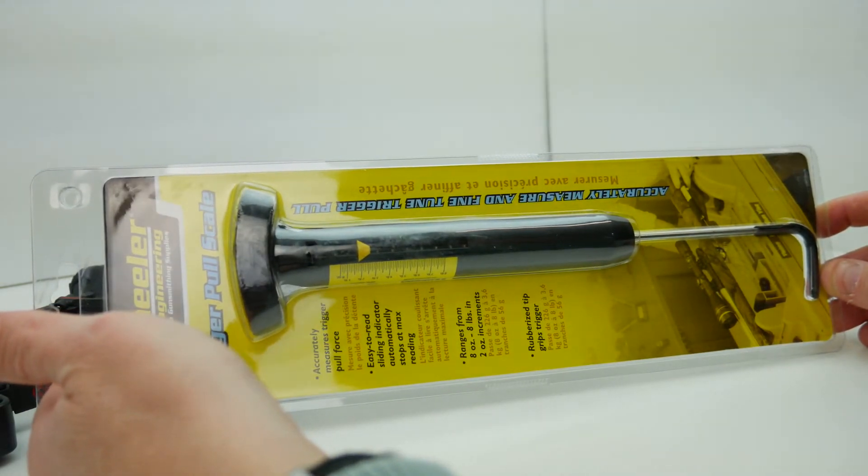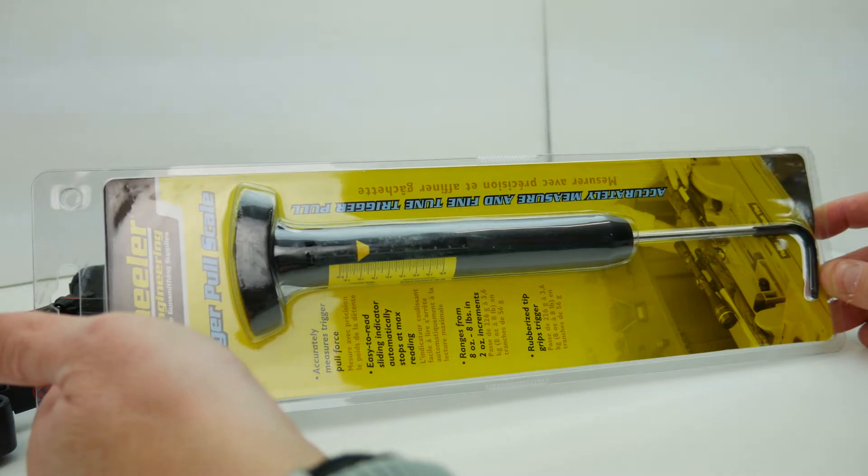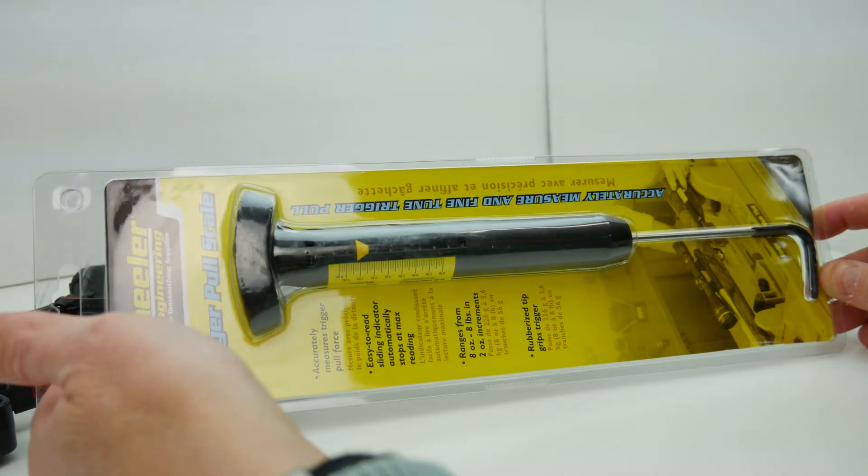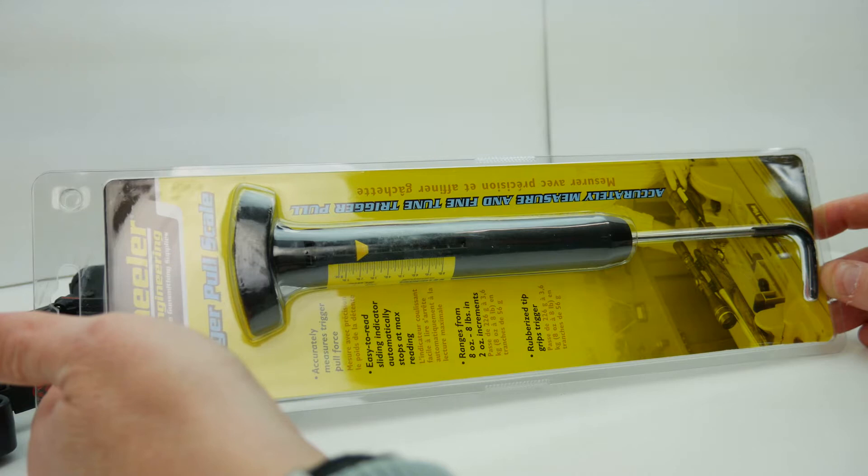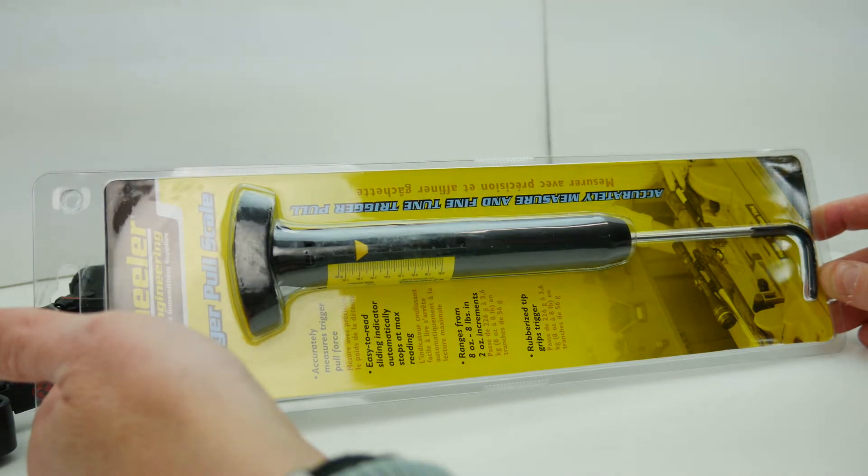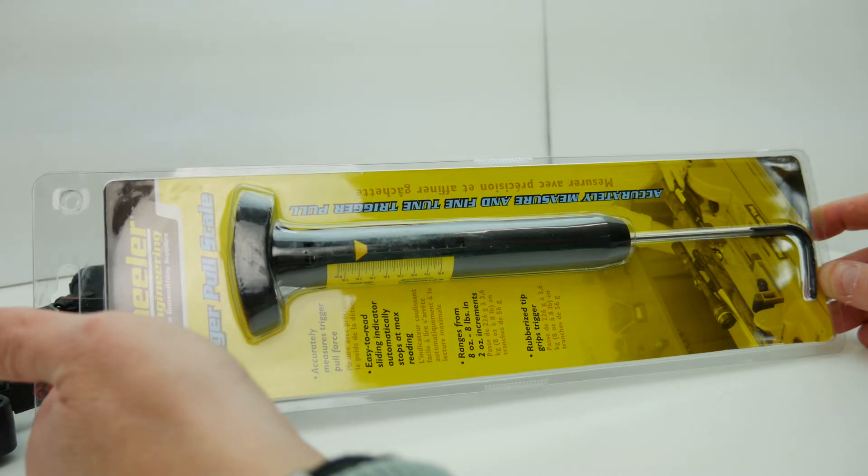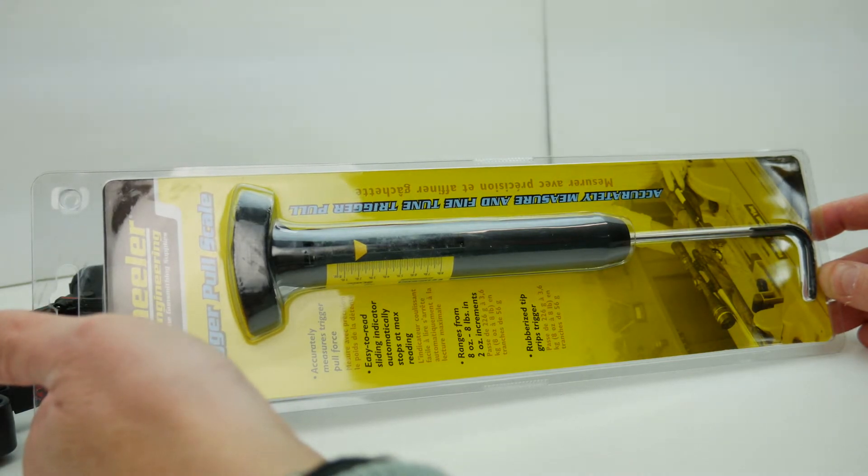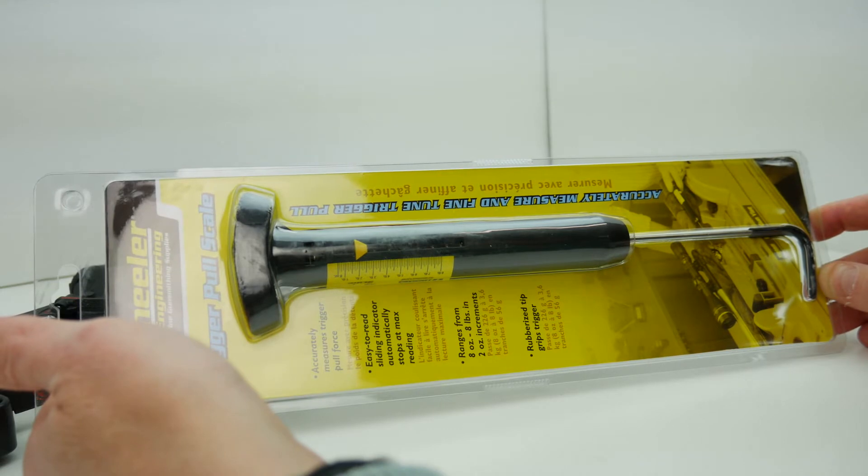This will measure a pull weight from eight ounces up to eight pounds. Let's see what Wheeler has to say about this. It measures in two ounce increments, it's accurate to plus or minus two ounces.